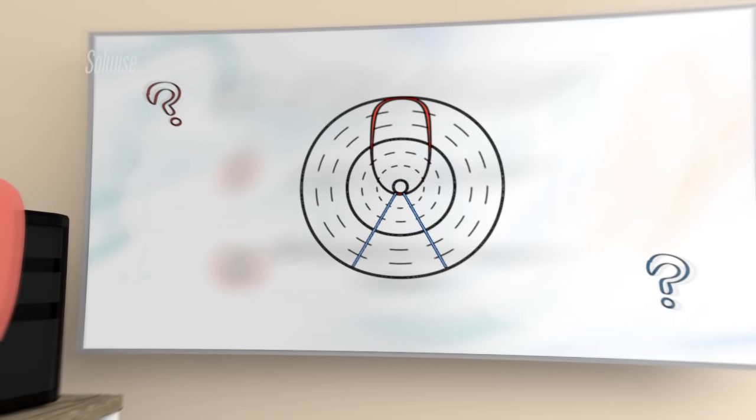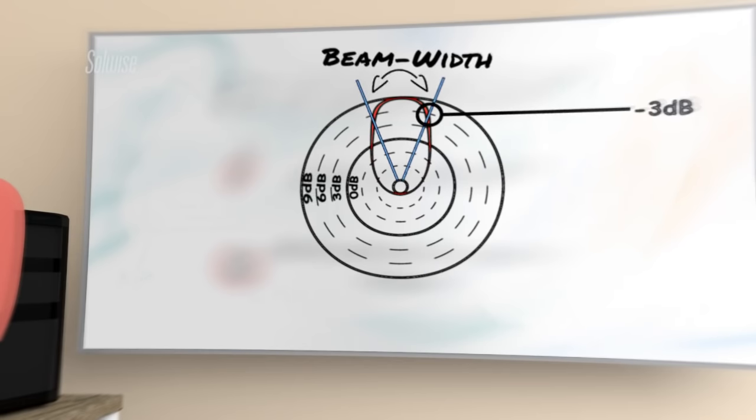The convention is to place the edges of the beam at the point where the signal level has dropped to one half of the peak level, i.e. the minus 3 dB point. For most antennas, you will find beam widths listed for both horizontal and vertical planes.